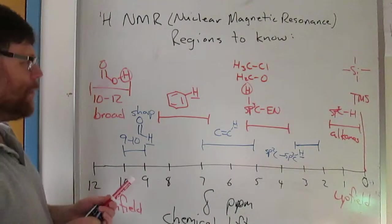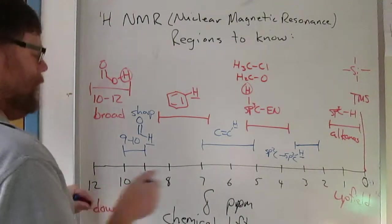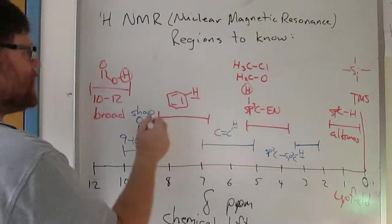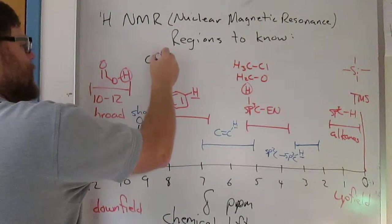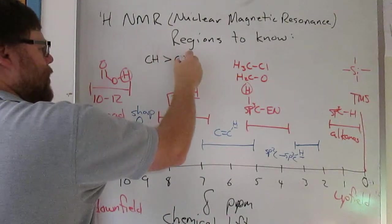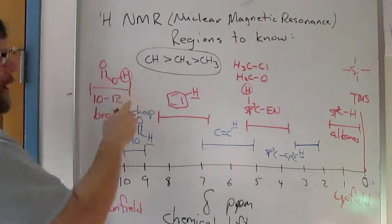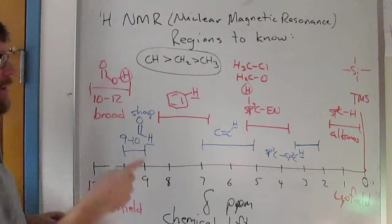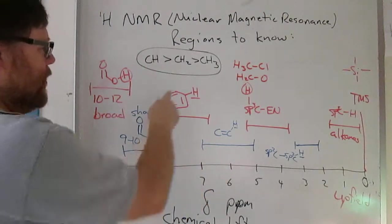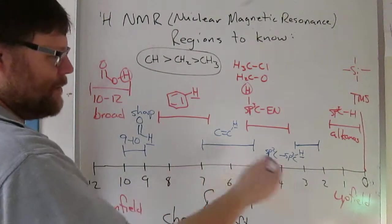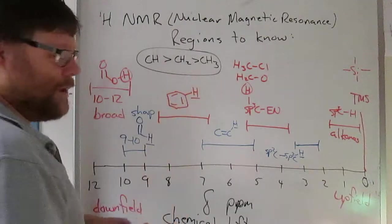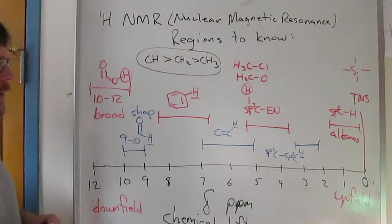One other thing to keep in mind: anywhere in any of these groups, a CH will tend to be downfield of a CH2, which tends to be downfield of a CH3, all else being equal.